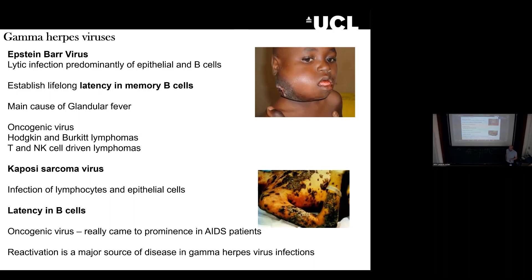Glandular fever tends to be self-limiting. The problems with both EBV and KSHV arise from the fact that they're oncogenic. Gamma herpes viruses establish latency a little differently from alpha and beta herpes viruses. When a gamma herpes virus infects a B cell, it transforms the B cell, making it into a long-lived B cell. It's not a malignant transformation, but if that transformed B cell acquires further mutations, it can become malignant and leads to a lot of B cell-driven cancers — Hodgkin and Burkitt lymphoma. We also see T and NK cell lymphomas.